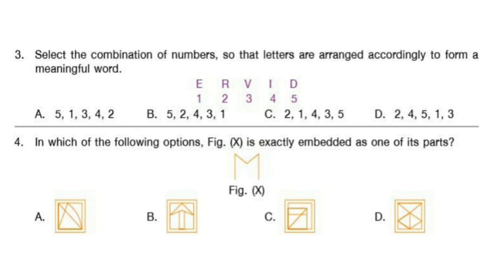Question 3. Select the combination of numbers so that letters are arranged accordingly to form a meaningful word. The letters are E, R, V, I, D. The correct answer is option B: 5, 2, 4, 3, 1. The letter formed is DRIVE — D-R-I-V-E.